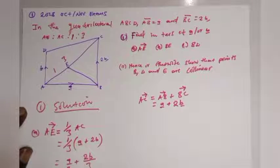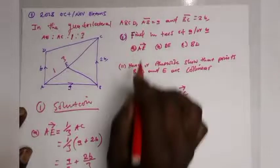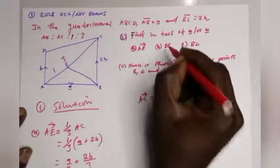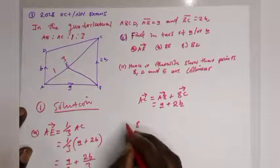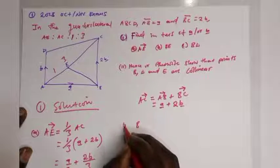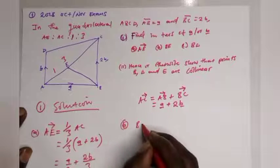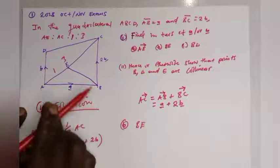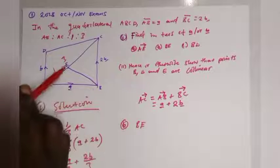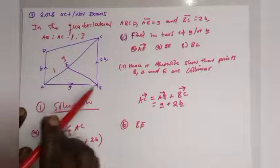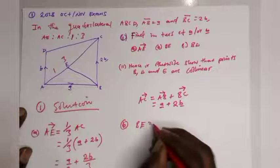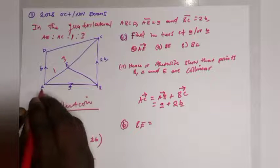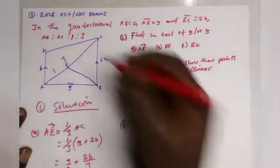We have found vector AE. Now let's find vector BE. Vector BE equals vector BA plus vector AE.